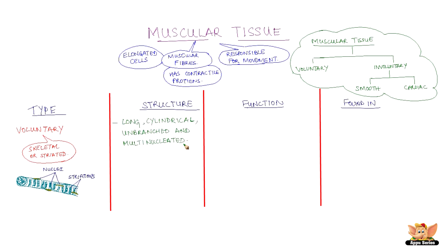The cells of this tissue are long, cylindrical, unbranched, and multi-nucleate meaning having many nuclei. Voluntary muscles help in body movement and are found attached to bones. Muscles in limbs are voluntary muscles.